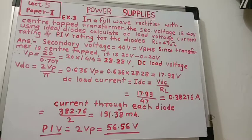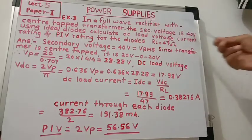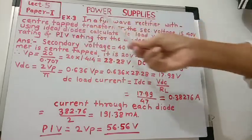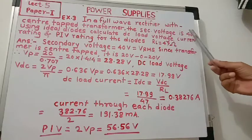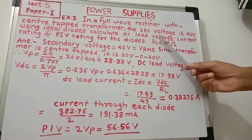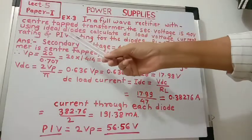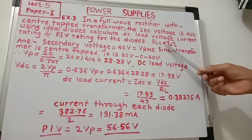Hello students, let us see another example — example number 3 in power supplies. In a full wave rectifier with a center tap transformer, the secondary voltage is 40 volts. Using ideal diodes, calculate DC load voltage (VDC), current rating of each diode, and PIV rating for the diodes, given load resistance RL is equal to 47 ohms.